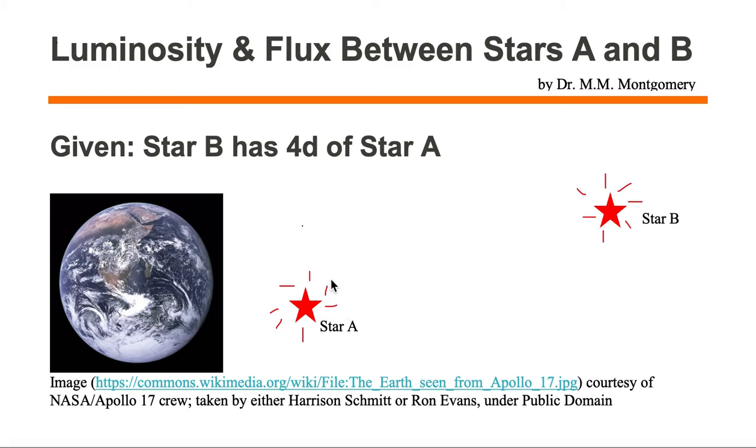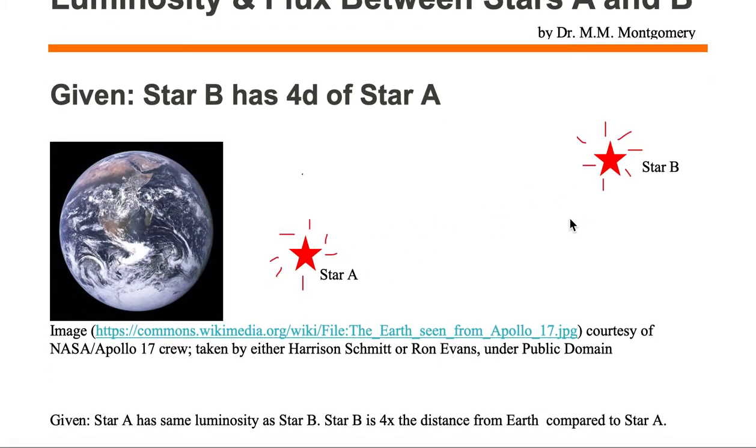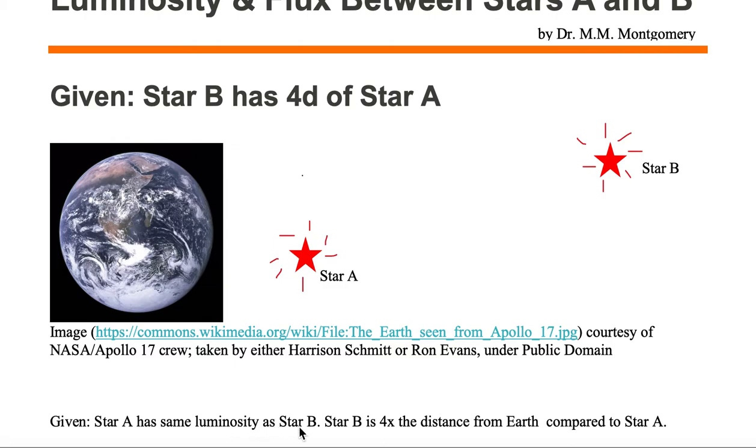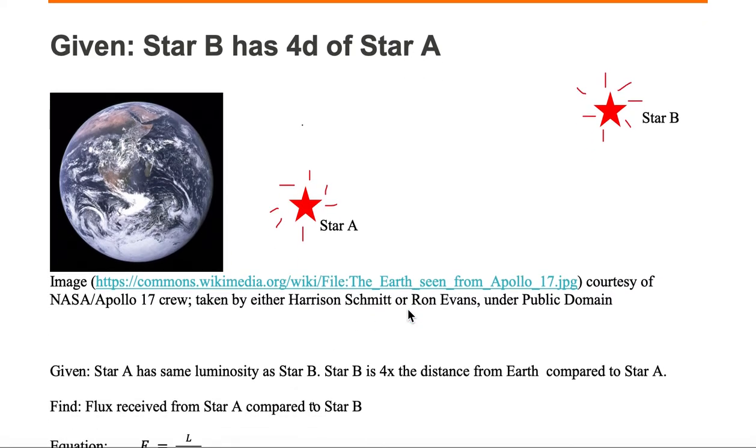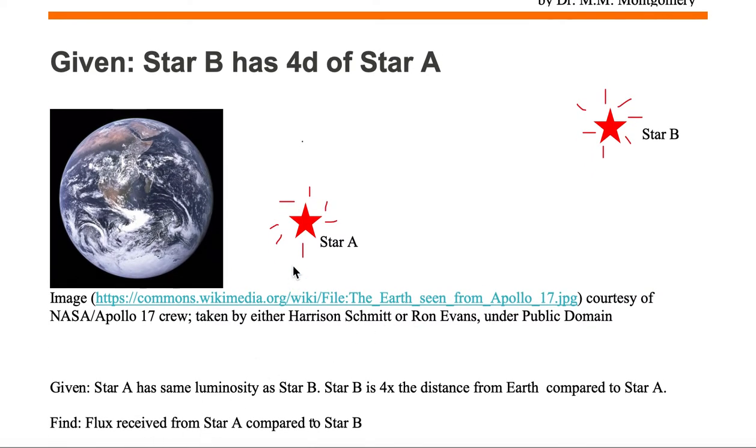Both stars are the same color because both stars have the same luminosity. We want to find the flux received from Star A compared to that of Star B.